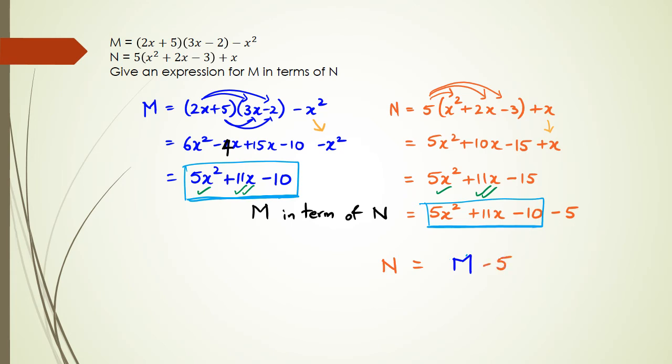Sorry, got the answer. Remember the question is actually asking for M in terms of N, and not N in terms of M. So that means I need to rearrange this equation, where I can say M is equal to N. So I can rearrange it. So M would become N, or negative 5 when it comes to this side becomes plus 5. So my final answer, therefore M is equal to N plus 5.